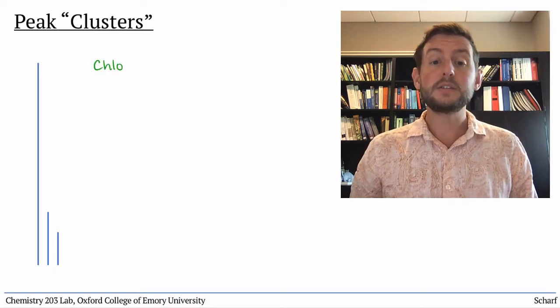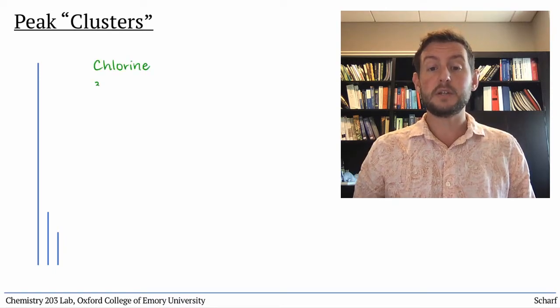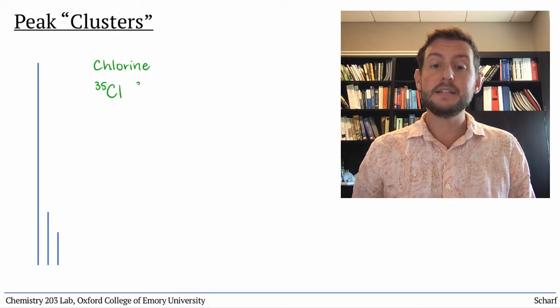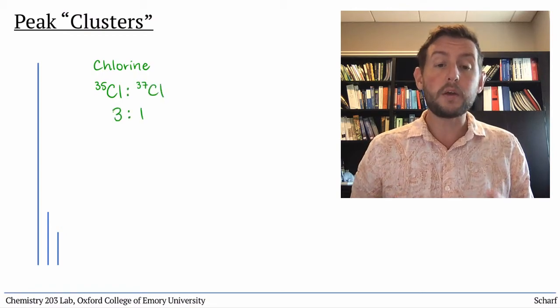Chlorine has two commonly occurring isotopes, Cl35 and Cl37, in about a 3 to 1 ratio.